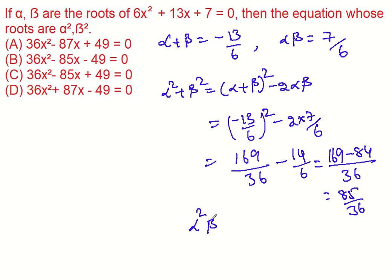Now, alpha square beta square. It's alpha beta whole square. So 7 by 6 whole square. 7 square value is 49, 6 square value is 36.